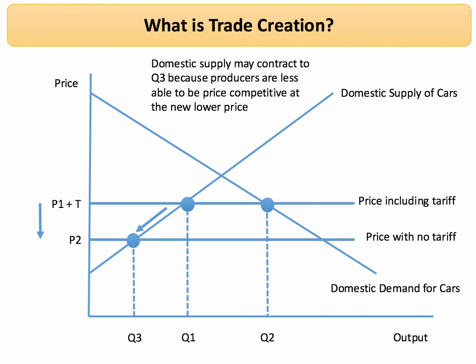Here are the trade creation effects. Firstly, domestic suppliers may not necessarily be able to compete as well at that lower price — it depends on their costs obviously. But we're going to assume that at P2 the domestic supplier will contract to Q3, because domestic car producers are perhaps not able to be price competitive at the new lower price.